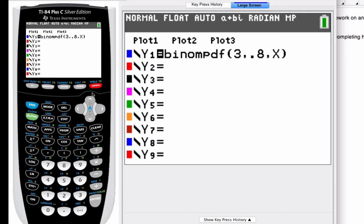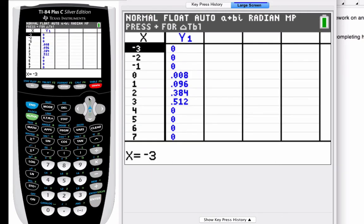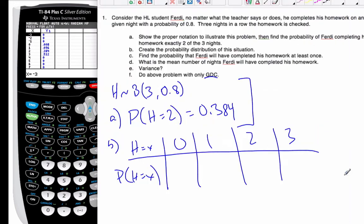I'm going to go to my table. And I look for 0, 1, 2, and 3. So from that, I know that this is 0.008, 0.096, 0.384, 0.512. So the table will make this distribution.